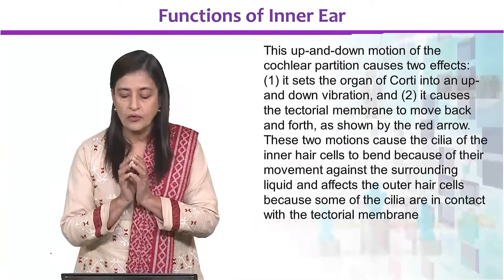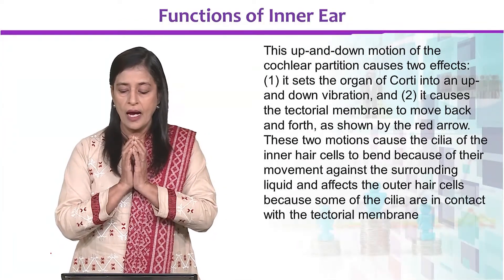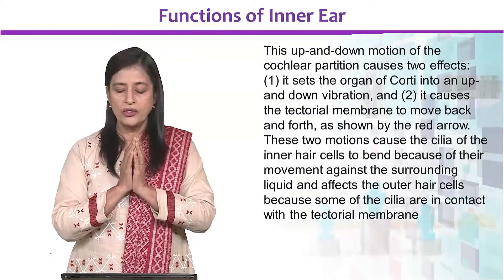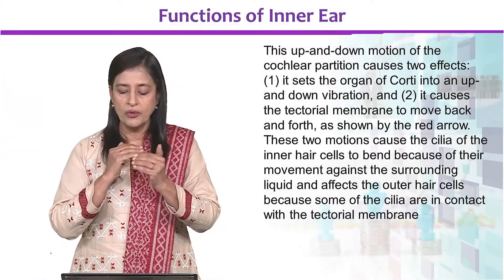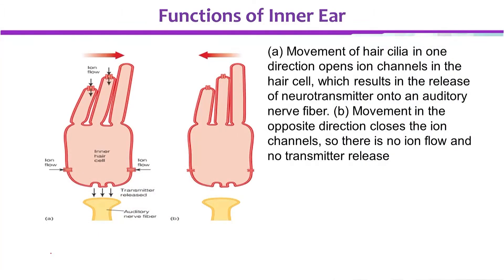यह जो up and down movement है, cochlear partition से होती है। Organ of Corti up and down vibration करता है, और जो tectorial membrane है वो भी आगे और पीछे हिलती है। तो यह दो motion से cilia के inner cell हिलते हैं, और surrounding liquid में vibration होती है। फिर hair cilia इन channels को खोलती है — एक तरफ की movement से channel खुलते हैं और ion flow होता है, जबकि दूसरी तरफ से नहीं होता।